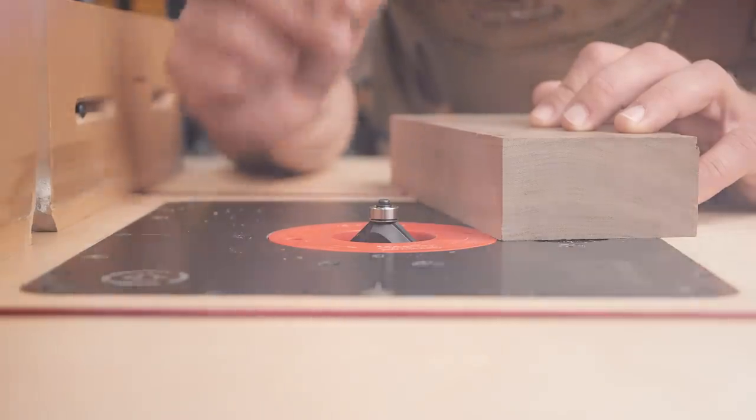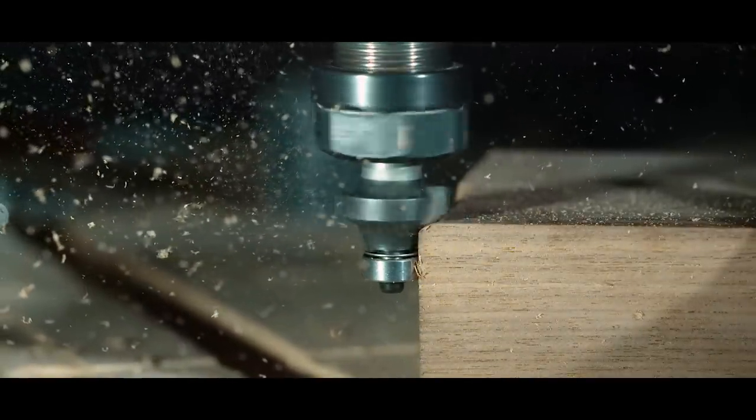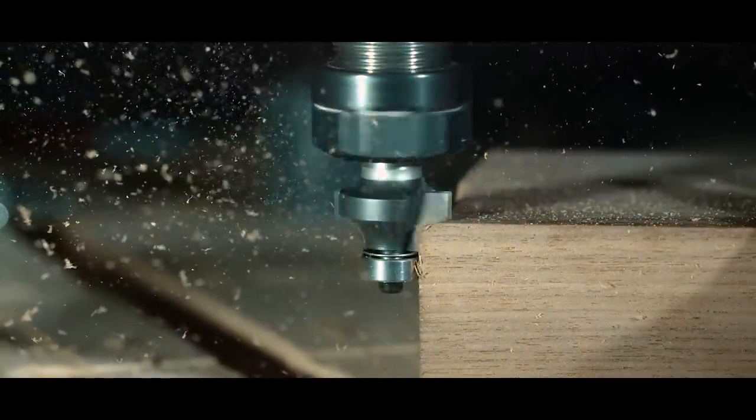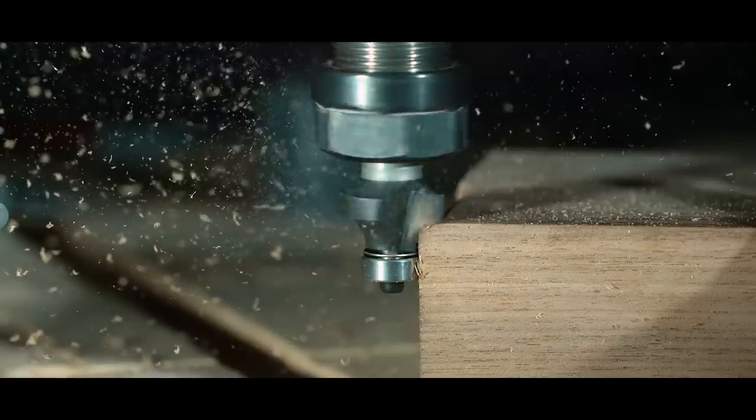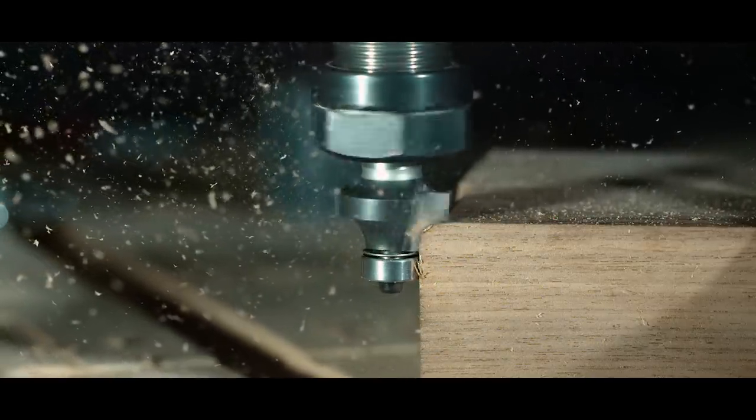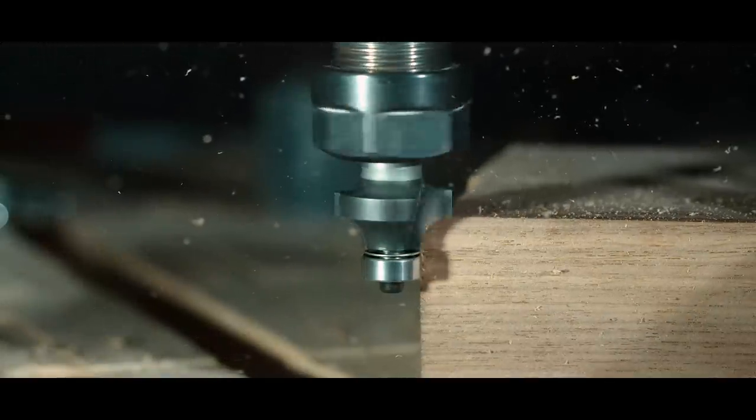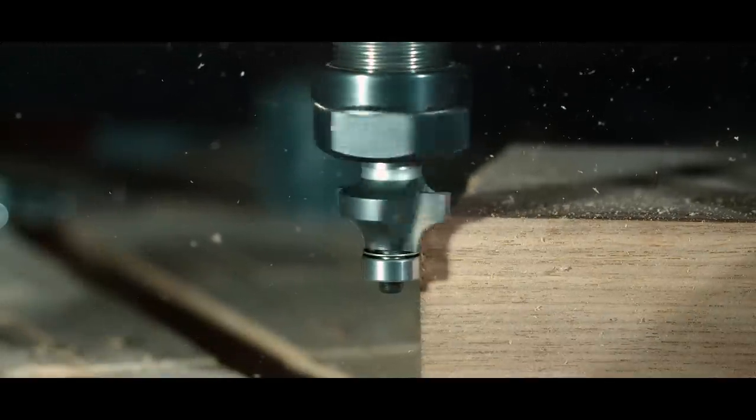All right, so here we have some footage we shot on the Avid CNC because we were able to get a much better angle on it. But this is the Bits and Bits three-eighths inch Astro coated round over bit and you can see here, I mean not only is this shot just absolutely incredible, but right at the end you can start to see some tear out and you can see it right here in the corner.